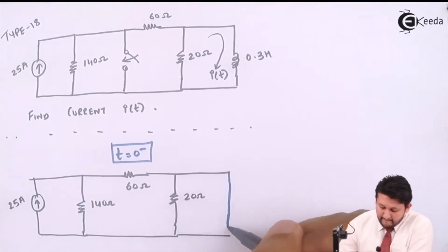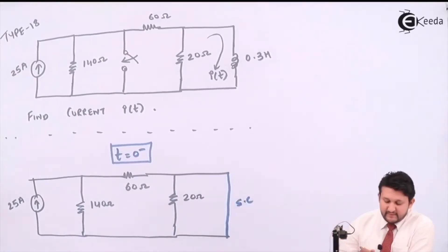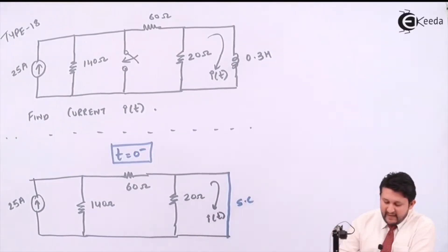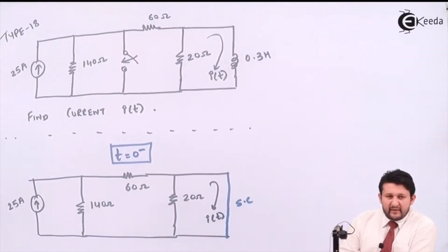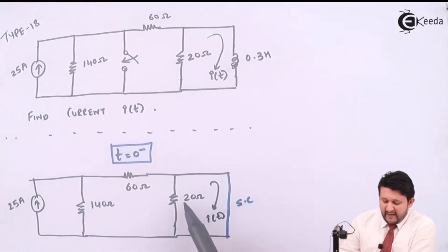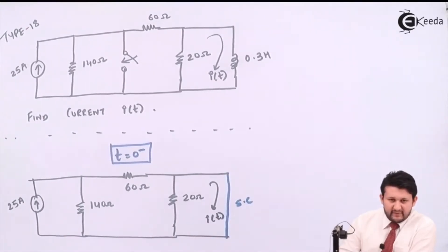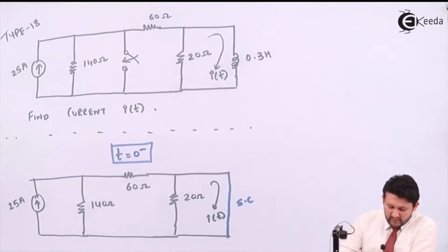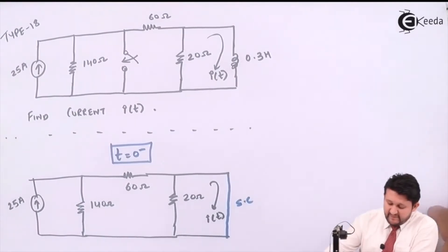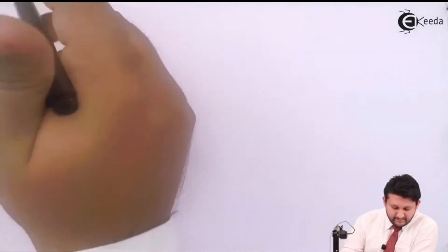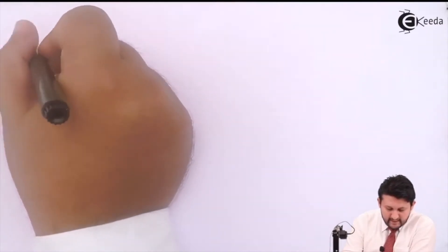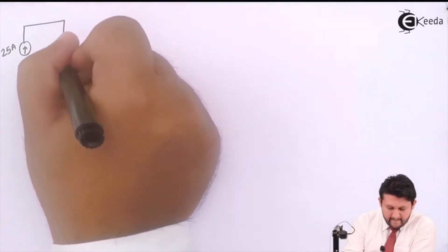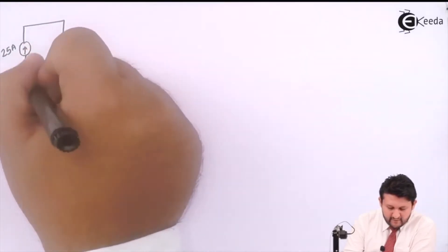We have a 20 ohm inductor. Since the current has been flowing for a very long time, the inductor acts as a short circuit. I need to find the current across this branch. Using the redundant property: any term in parallel with a short is removed from the circuit straight away. So the simplified circuit has a current source and a resistance of 140 ohms.